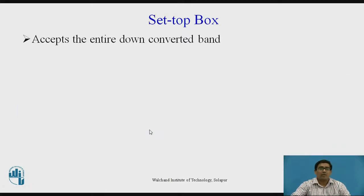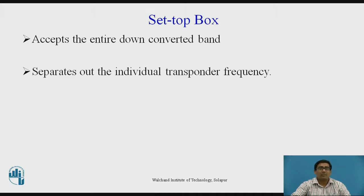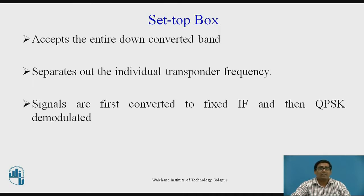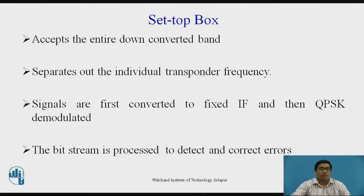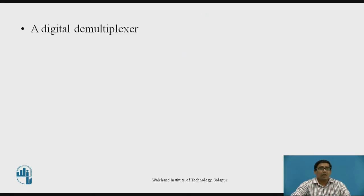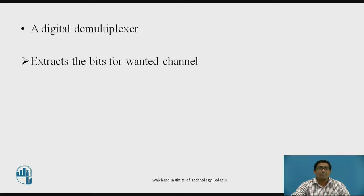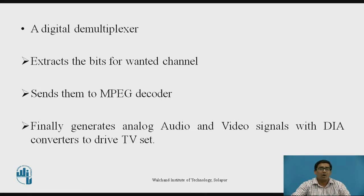The set-top box accepts the entire down-converted band and separates out the individual transponder frequencies. Signals are first converted to a fixed intermediate frequency and then transmitted to the QPSK demodulator. The bit stream is processed to detect and correct errors. A digital demultiplexer is used to extract the bits for the wanted channel and send them to the MPEG decoder, which finally generates the analog audio and video signals via a DAC to drive the TV set.